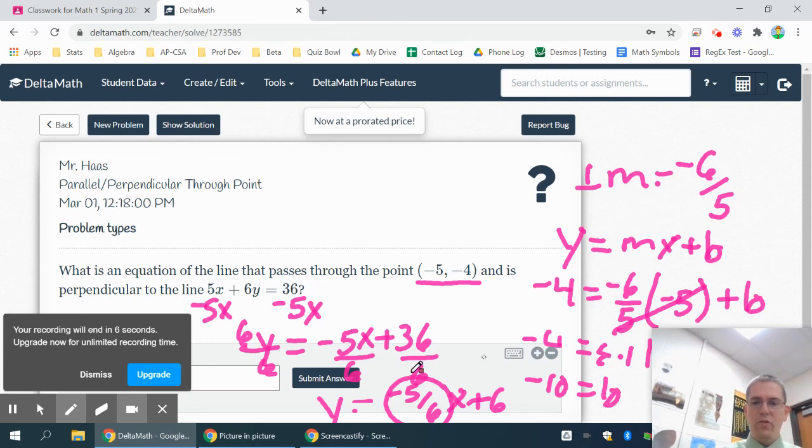So your equation should be y equals negative 6 over 5x minus 10.